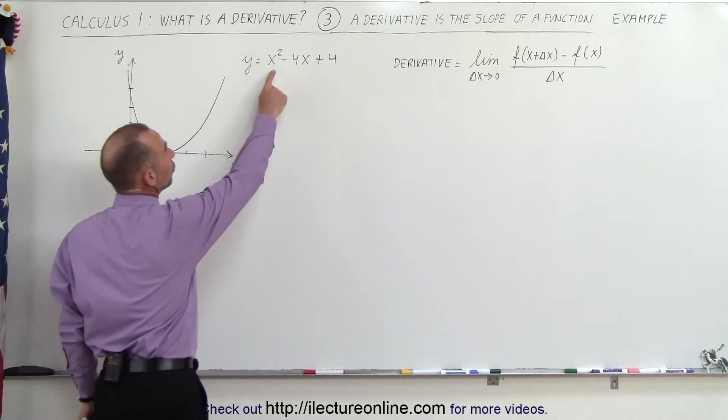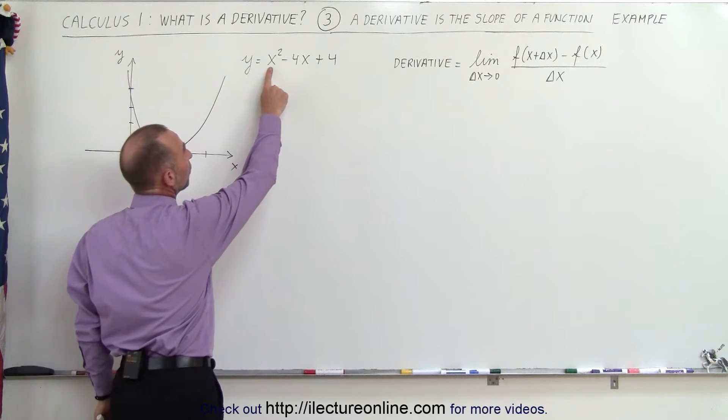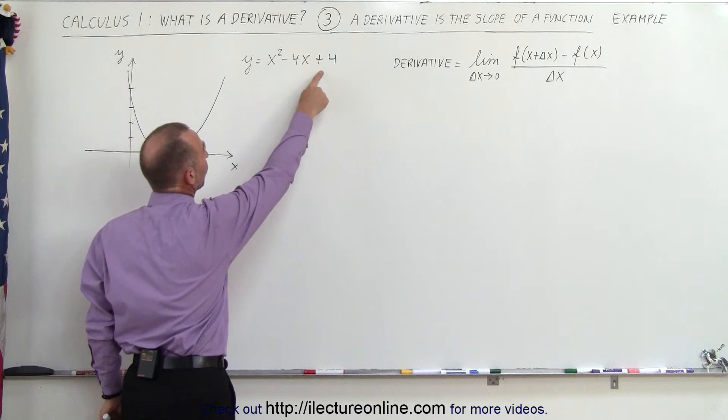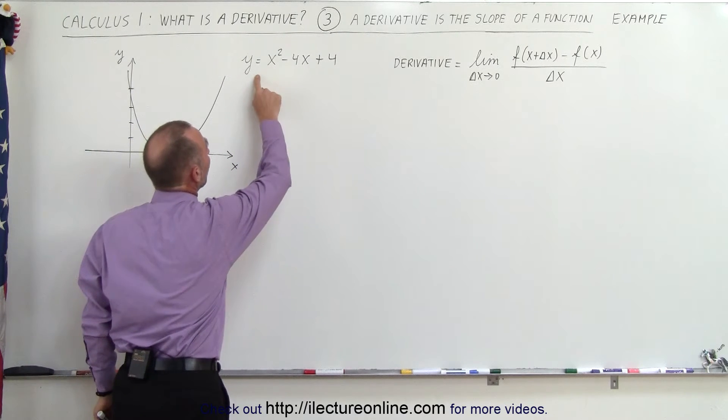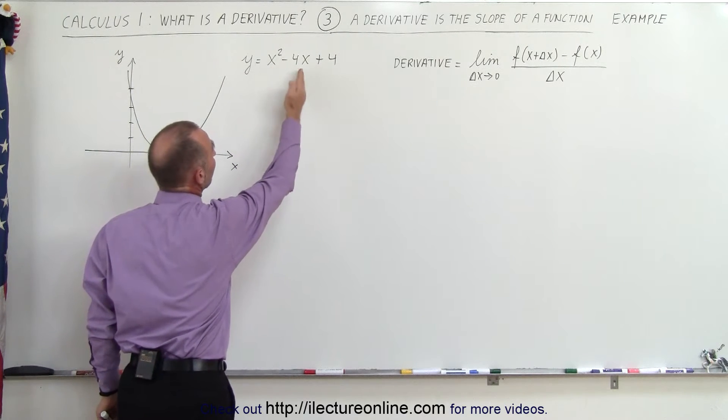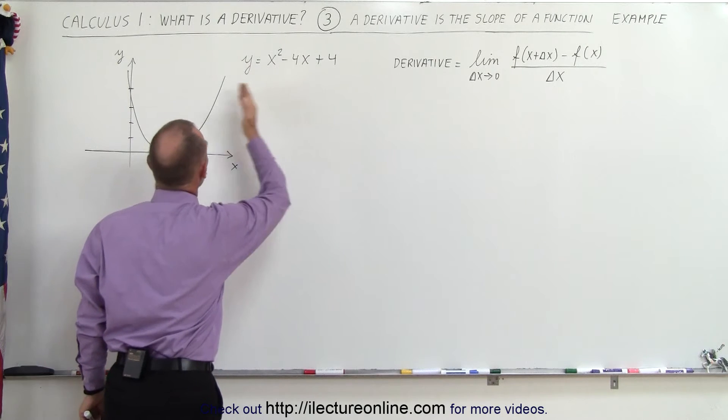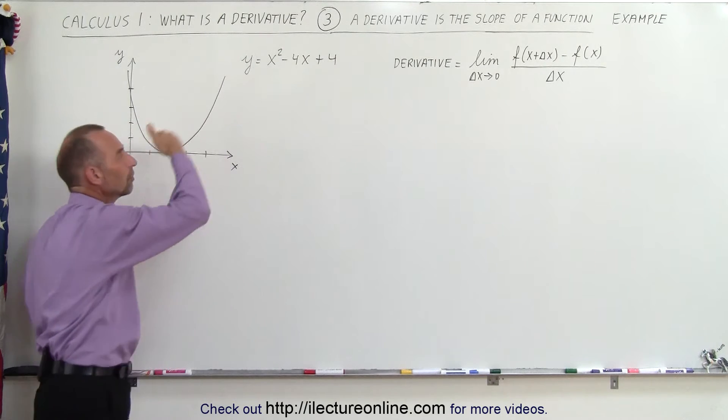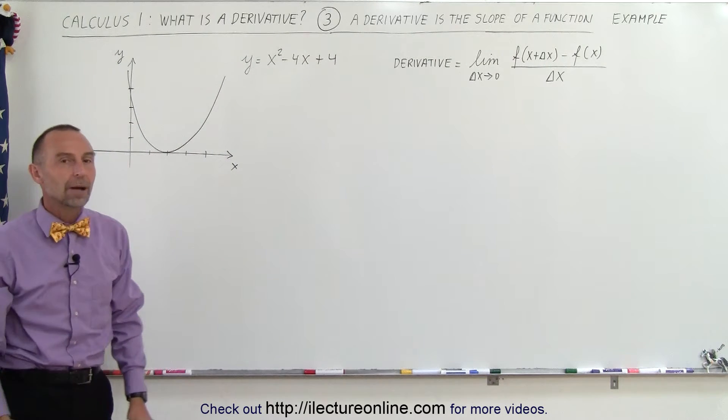When you let x equal 2, you get 4 minus 8 plus 4, which is 0. When you let x equal 0, you get y equals 4. So it's easy then to graph the parabola.